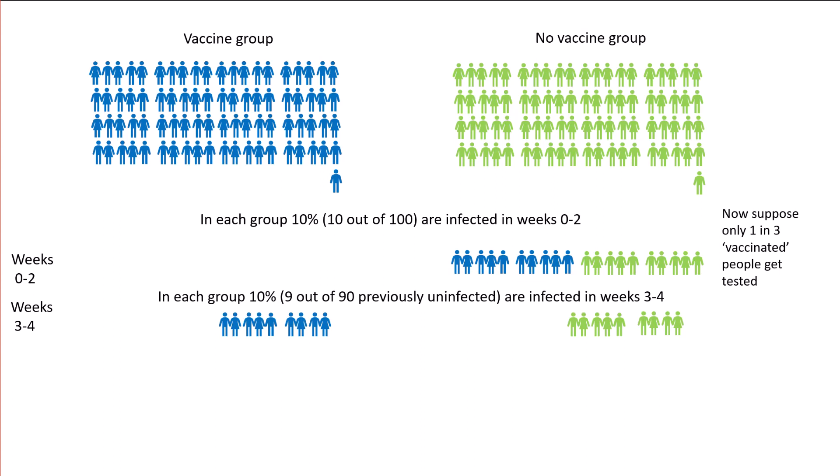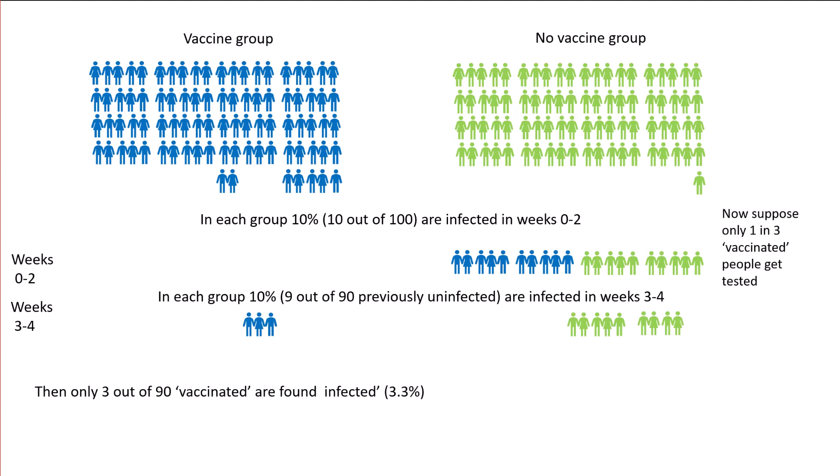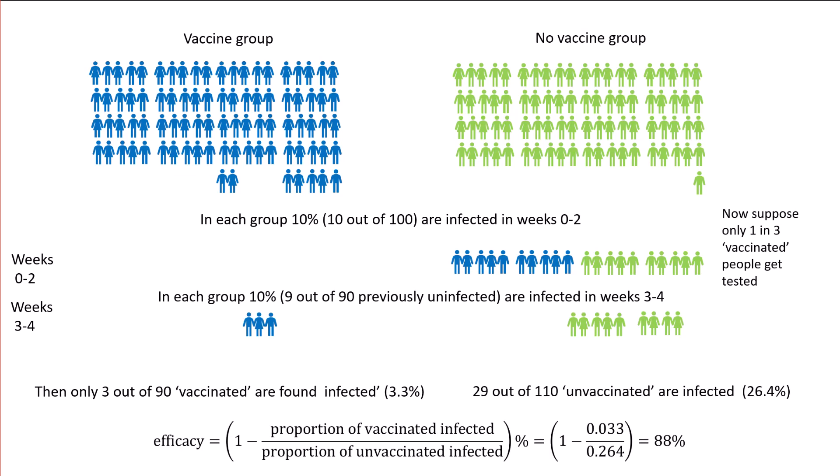Suppose only one in three of the vaccinated people get tested. That leaves us with just 3 out of the 90 classified as vaccinated found to be infected — only 3.3%. But we still have our 29 out of 110 unvaccinated who are infected — 26.4%. Now the efficacy has pushed up to 88%, even though it's simply a placebo.